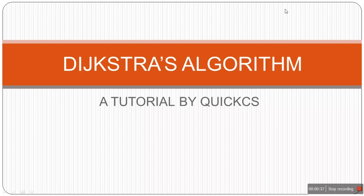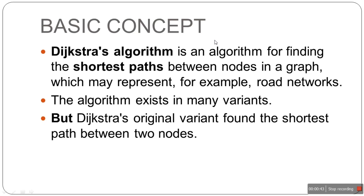Today we are going to learn Dijkstra's algorithm. Dijkstra's algorithm is an algorithm for finding the shortest path between nodes in a graph, which may represent, for example, road networks. Basically, you are finding the shortest path from point A to point B — for example, from city A to city B through four different cities. The algorithm exists in many variants, but the original one finds the shortest path between two nodes.